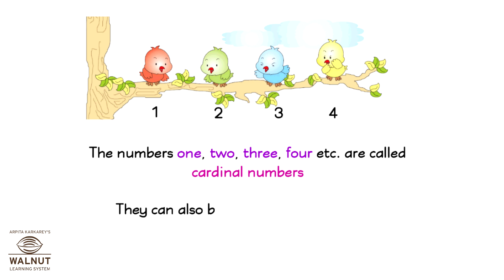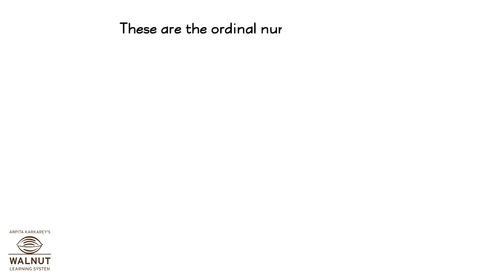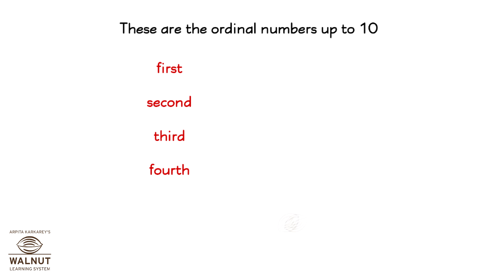Cardinal numbers can also be written as 1, 2, 3, 4, etc. These are the ordinal numbers up to 10: 1st, 2nd, 3rd, 4th, 5th, 6th, 7th, 8th, 9th, and 10th.